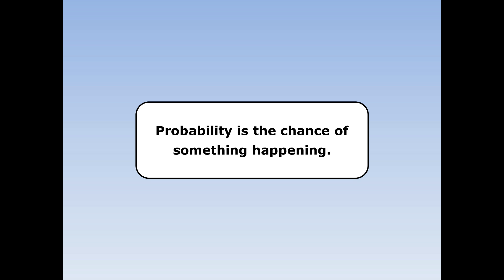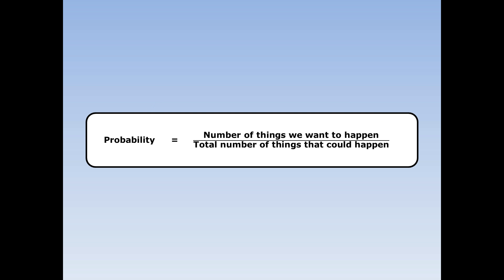Probability is the chance of something happening. Probability is the number of things we want to happen over the total number of things that could happen.